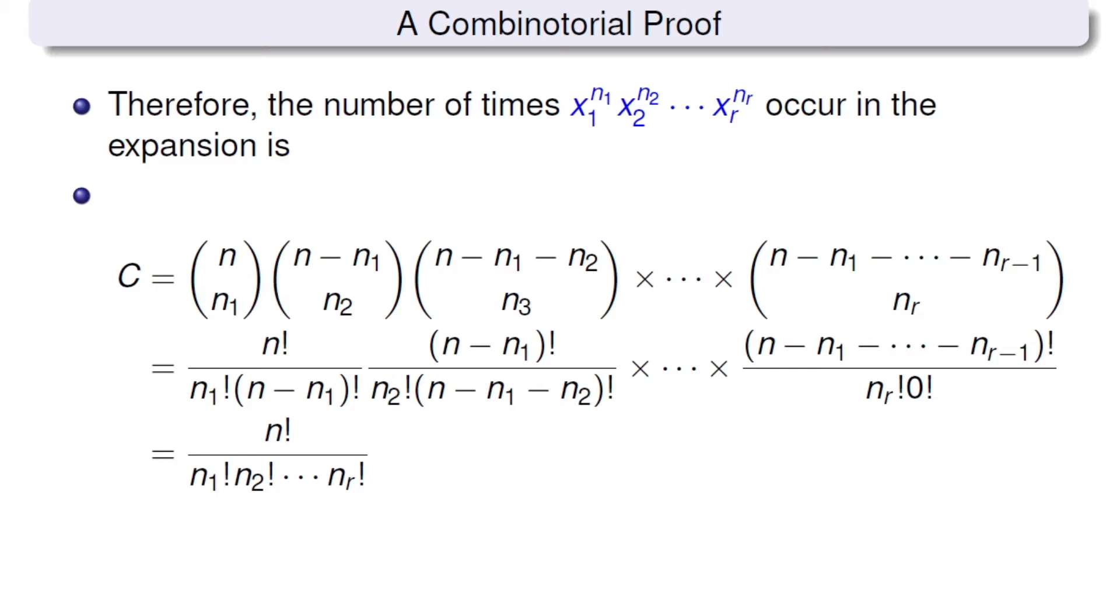And finally, what's left is just n factorial over n1 factorial, n2 factorial, and nr factorial. Here, n1 through nr are non-negative integers with the summation being n.